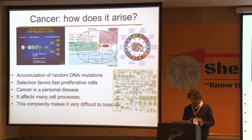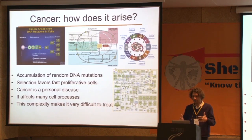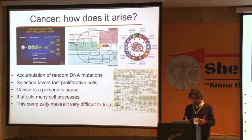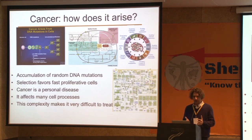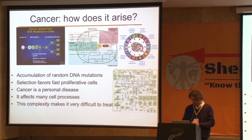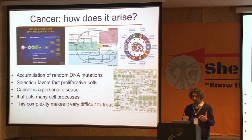Cancer is more or less the accumulation of random gene mutations which will trigger some cells to increase their rate faster than others, and then a tumor can arise this way. It is random. There are no two identical tumors — it's a personal disease. You don't have the same tumor as your neighbor. And it also affects many different cellular processes, so in medical terms the complexity of the disease is really very high.